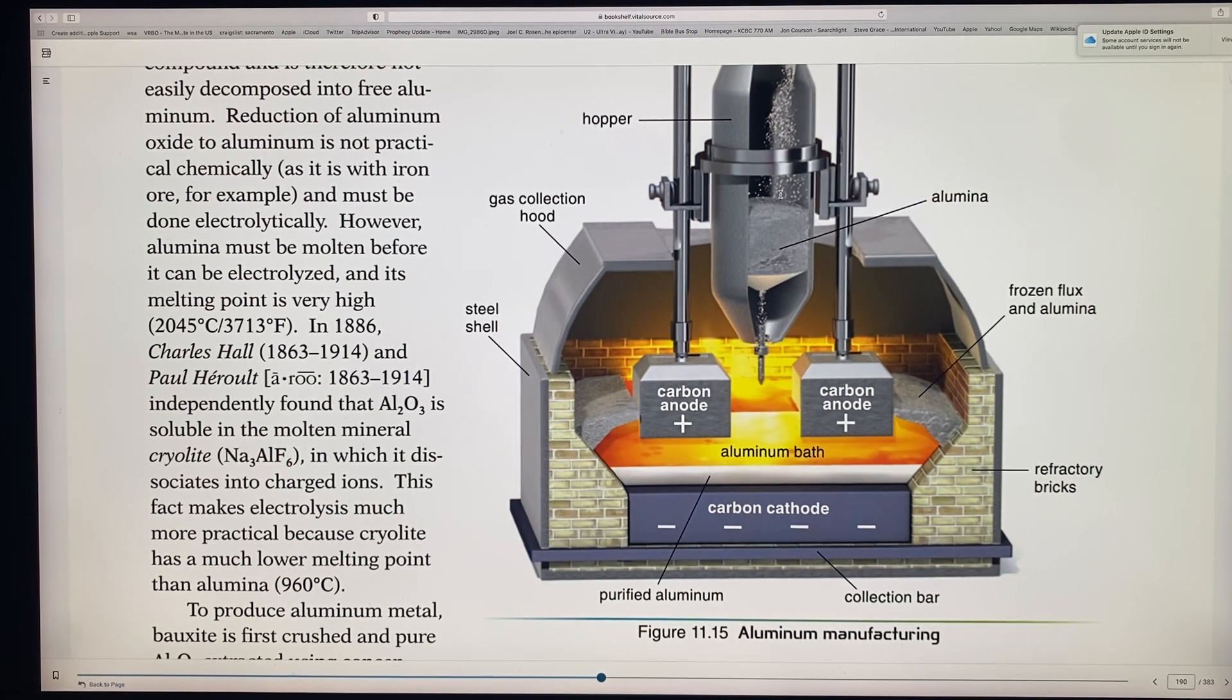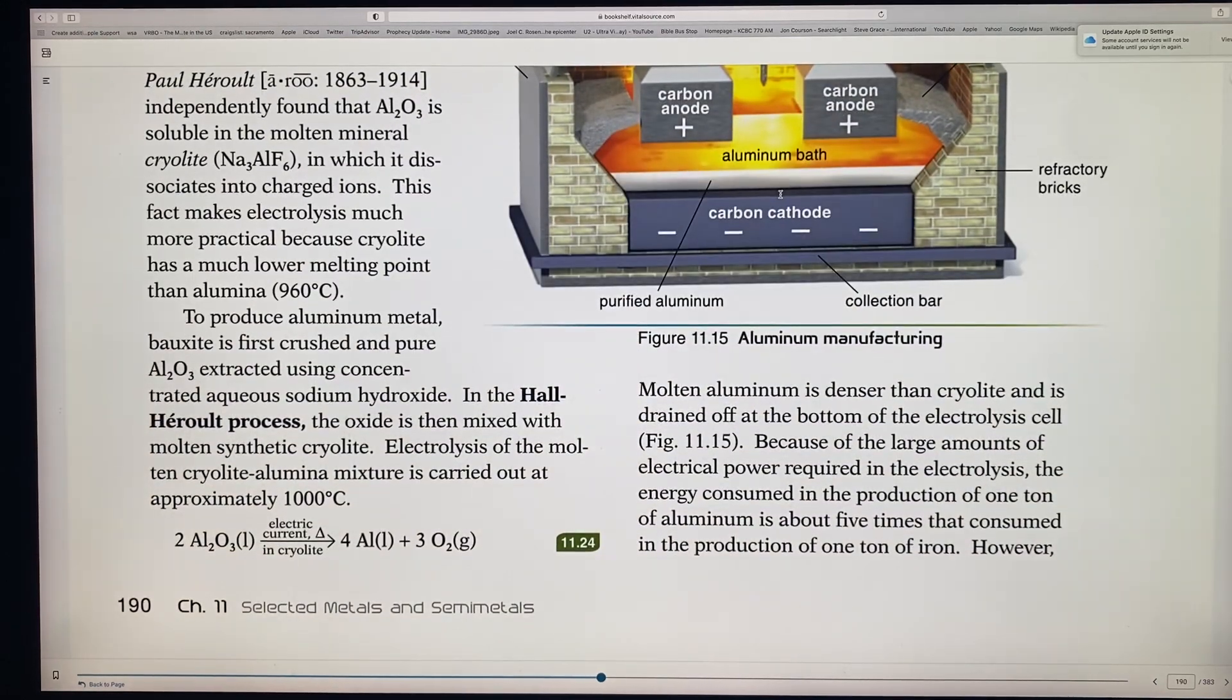So now they could possibly take aluminum, get aluminum product out of the ore a little easier. So this is important just to remember this process. To produce metal bauxite is first crushed and then the pure aluminum oxide is extracted using this concentrated aqueous sodium hydroxide. And this is called the Hall Heroult process. The oxide is then mixed with molten synthetic cryolite and the electrolysis of the molten cryolite aluminum mixture is carried out at approximately 1,000 degrees instead of 2,400 degrees.